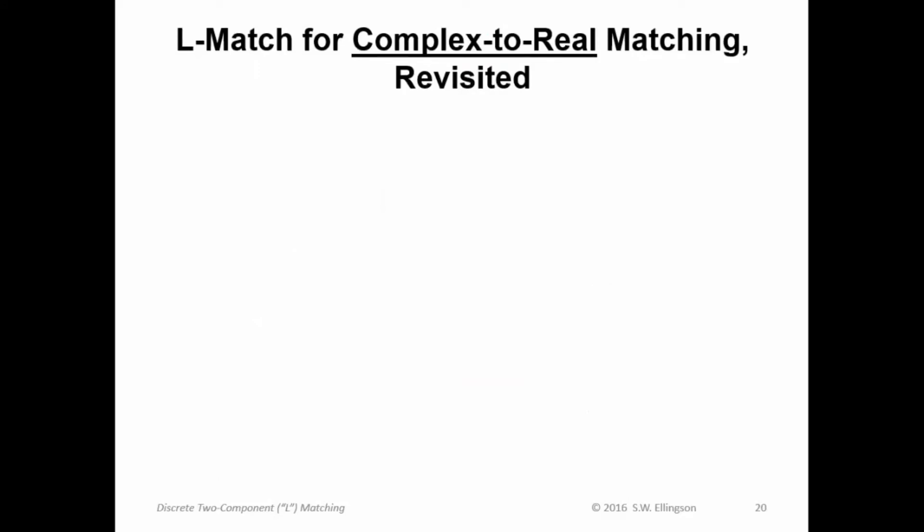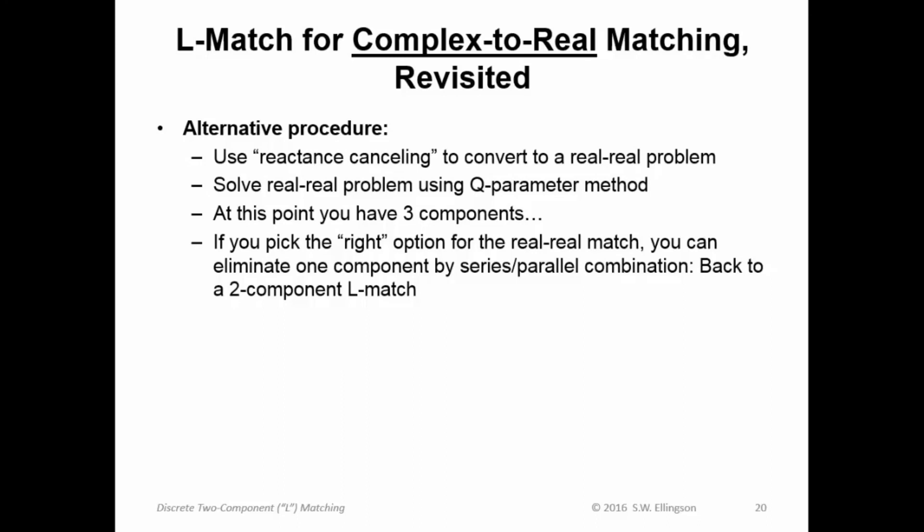Let's go back just a moment to this issue of how to do complex-to-real matching. We just did real-to-real matching. But there's an easy way to get from real-to-real to complex-to-real that you might not immediately see. I'd like to show that to you. The alternative procedure goes like this. First, use reactance canceling to convert the complex-to-real problem to the real-to-real problem. What you can do is, let's say you have a complex-valued impedance over here. And you're trying to match it to a real-valued impedance over here. Right? You could do the complex-to-real problem. But instead, you could also throw in a reactance jX here. And thereby convert this to a real-to-real problem. And then you can solve the real-to-real problem using the method we just showed.